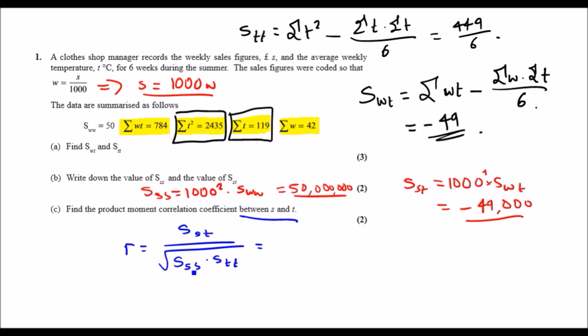That's the idea - look at which is between S and T, throw S and T at the top, and then find the combined ones underneath and square root them. Now we have everything. ST is minus 49,000, SS is 50 million, and STT we found right at the top is 449 over 6.